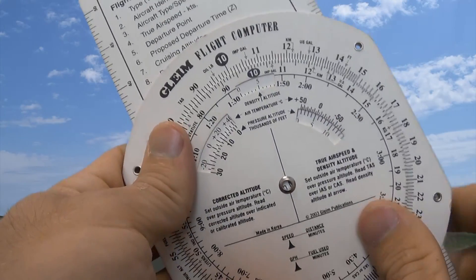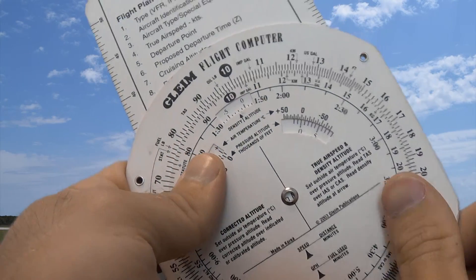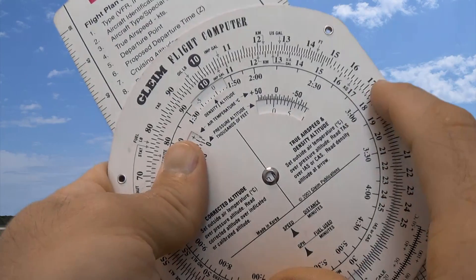So let's go ahead, first thing we're going to do is dial up our altimeter to 29.92, find our pressure altitude and then also look at our temperature outside and find our temperature.